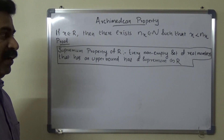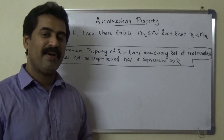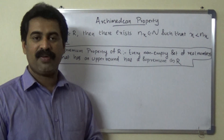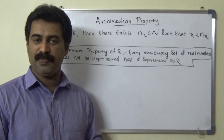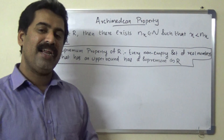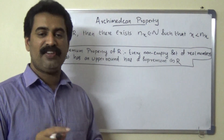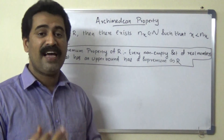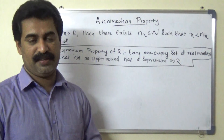Here we will prove this theorem by using the contradiction method. We want to prove that if x is any real number, then there exists a natural number nx such that x is less than nx.